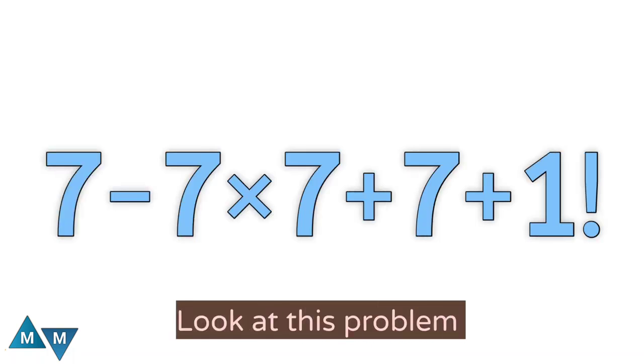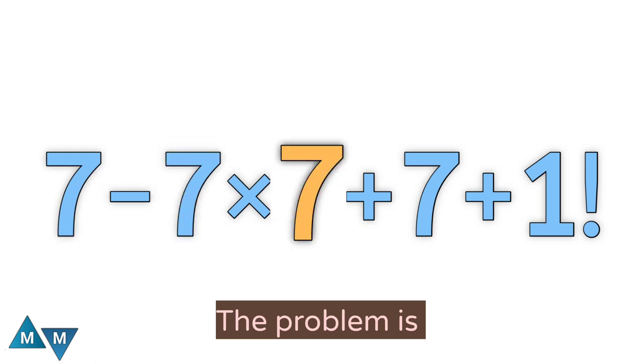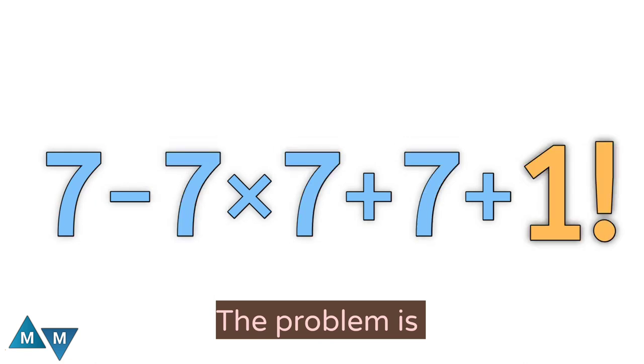Hi guys, look at this problem. The problem is 7 minus 7 times 7 plus 7 plus 1 factorial.